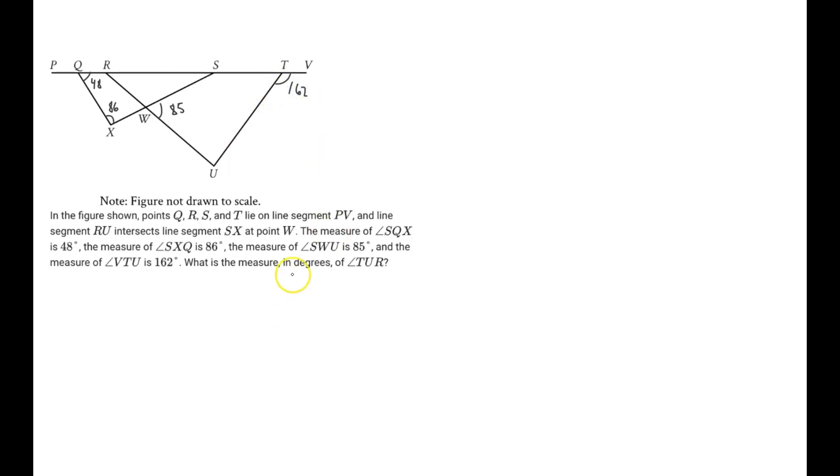And the problem says, what is the measure in degrees of angle T, U, R? So, this is the angle we're trying to find. So, let's see. They gave us a bunch of angle measures, and now we just have to implement theorems that we know in order to find those missing angle measures.